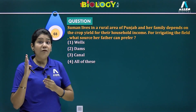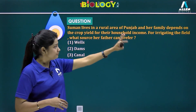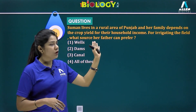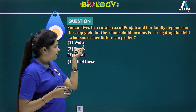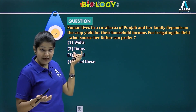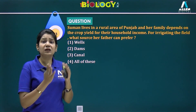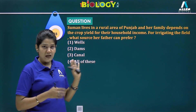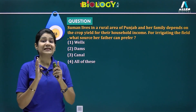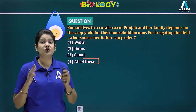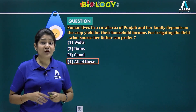Third question: Suman lives in a rural area of Punjab and her family depends on crop yield for household income — what source can her father prefer for irrigating the field? The options include dams, canals, and all of these. The correct answer is all of these, as canals from dams as well as direct canal sources can all be used.